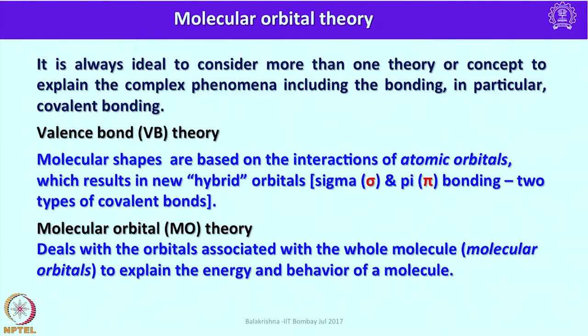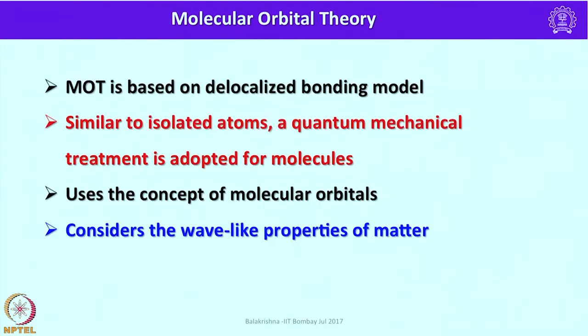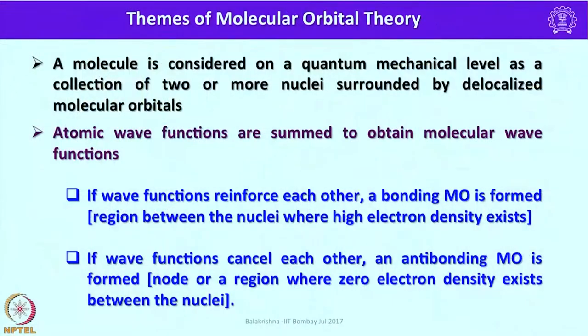Molecular orbital theory essentially deals with orbitals associated with the whole molecule — we call these molecular orbitals — that result from the combination of atomic orbitals of the atoms combined to make a molecule, to explain the energy and behavior of a molecule. This is the major difference: molecular orbital theory is based on a delocalized bonding model. Similar to isolated atoms, a quantum mechanical treatment is adopted for molecules, using the concept of molecular orbitals and considering the wave-like properties of matter.